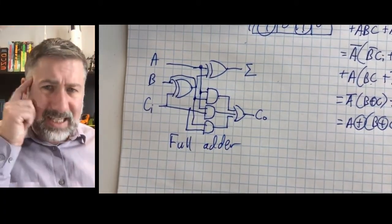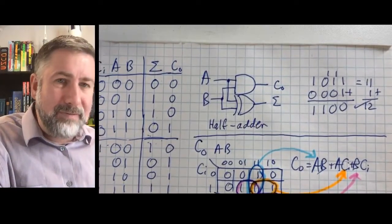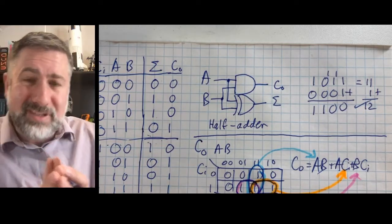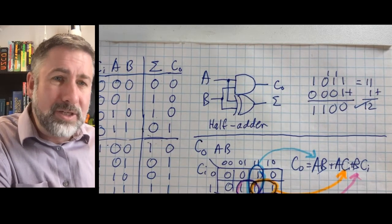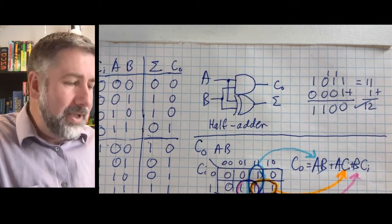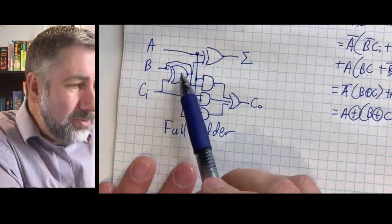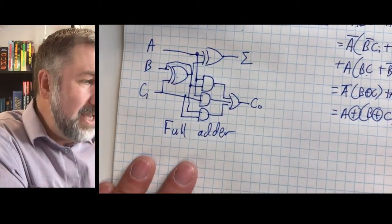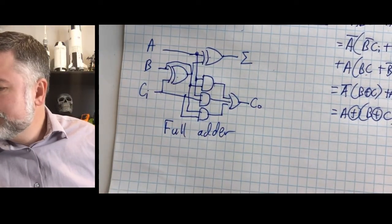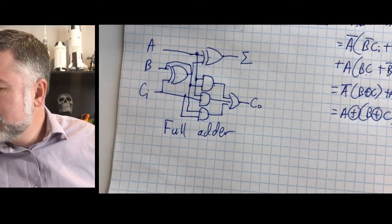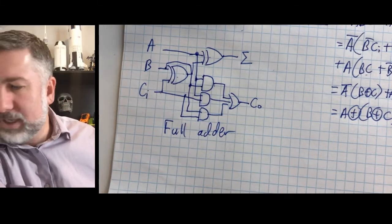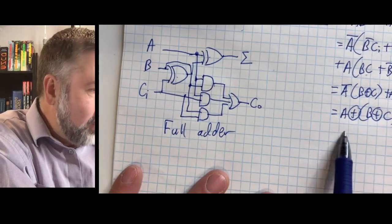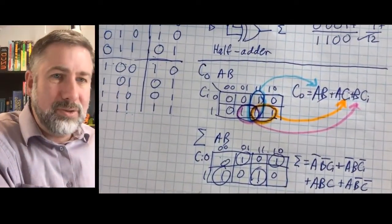But let's think about this for just one more minute. A half adder adds two numbers together, and a full adder is adding two numbers and then adding the carry. So maybe we could just take two half adders and put them together to make a full adder. That kind of looks like we could do that because there are two exclusive OR gates and two AND gates in here.